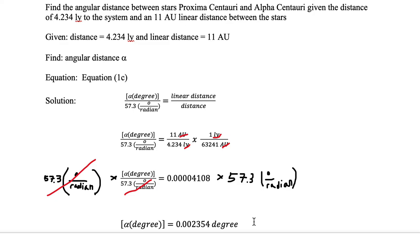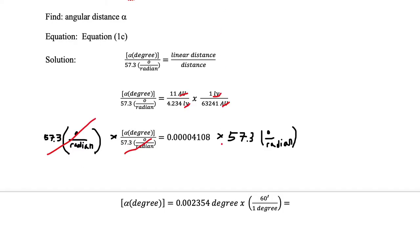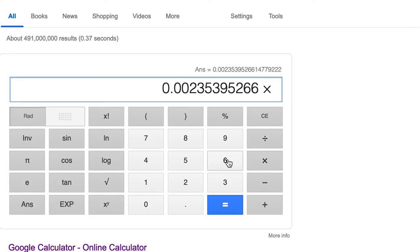So our answer in units of degrees is 0.002354 degrees. This is a very small number. Let's convert it into arc minutes. We know that the conversion is 1 degree equals 60 arc minutes. So now we can cross out degree and multiply by 60. Let's go ahead and multiply our answer by 60 on the Google calculator. We multiply by 60, hit equal, and now we have an answer of 0.141.